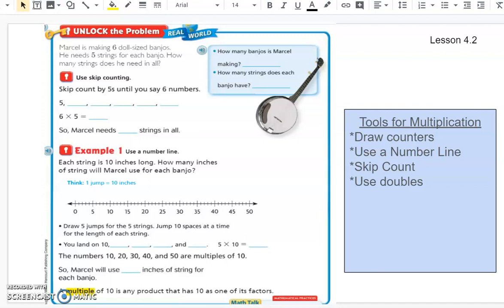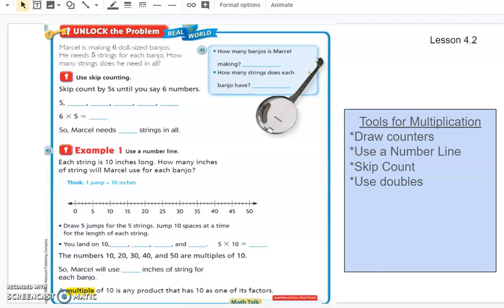So we're going to be learning about Marcel. He is making 6 doll-sized banjos. He needs 5 strings for each banjo. How many strings does he have in all? So we have a picture of our banjo on the side there. So I can picture 6 of those doll-sized, meaning that they are small. And I'm going to highlight those key pieces of information just by underlining there. It's important to do that when you're solving math problems, especially when you have a lot of words involved.